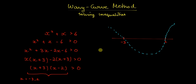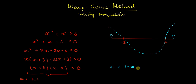We want x to be greater than 0. The expression is positive here and here, so x belongs to (minus infinity, minus 3) union (2, infinity).